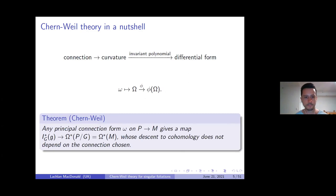We get a map from the algebra of invariant polynomials on the Lie algebra to differential forms on the base manifold. Their image consists of closed forms, and when you pass to de Rham cohomology, the induced map does not depend on the connection chosen. This process gives genuine topological information independent of these geometric objects — these connection forms you have chosen.